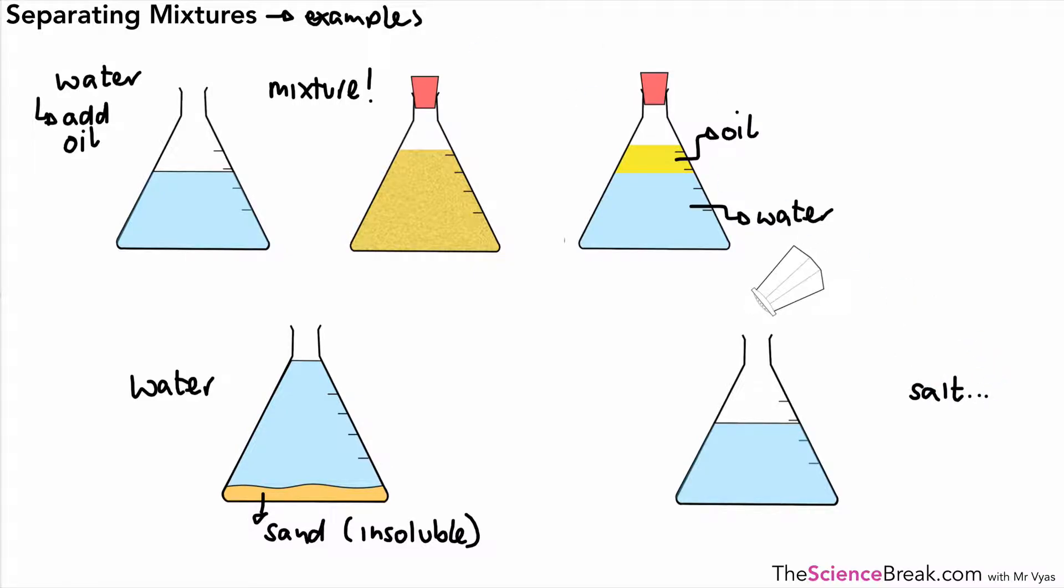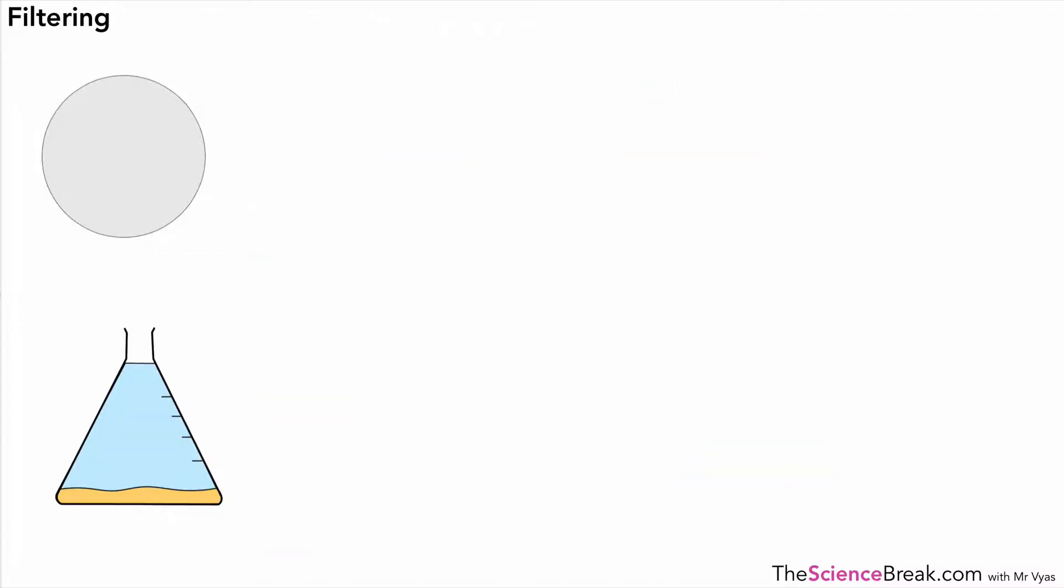This one here, we have some salt. We can sprinkle some salt in the water there, and we'll end up with what we call a solution. The salt makes a solution because the salt is something that we call soluble. In other words, it can dissolve and make a solution. So here we've got some examples of mixtures, and let's take a look at the first method for separating out mixtures.